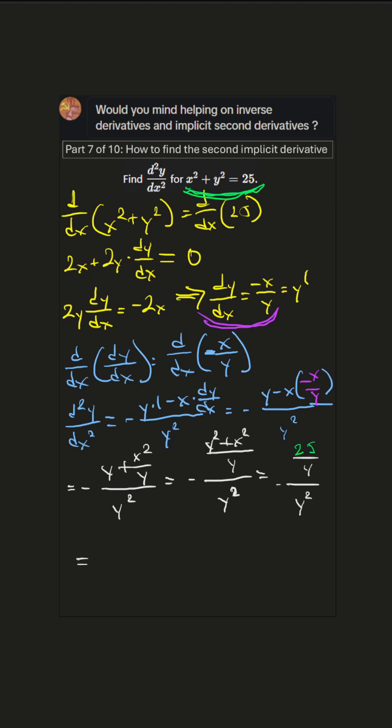And now finally we have negative 25 over y³ equals d²y/dx² which is the second implicit derivative y double prime. Alright, hope that helps. Thanks for watching.